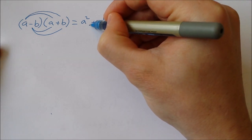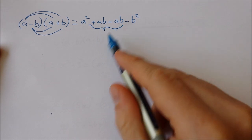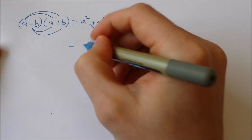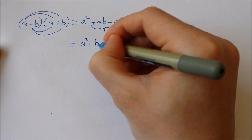Now you'll notice that these terms in the middle, plus ab minus ab, well they're actually equal to zero. So we're left with a squared minus b squared.